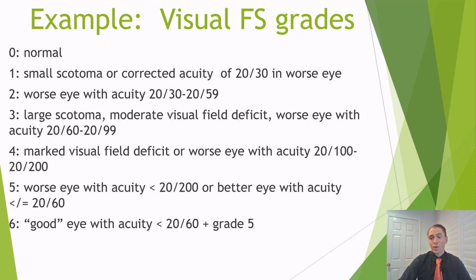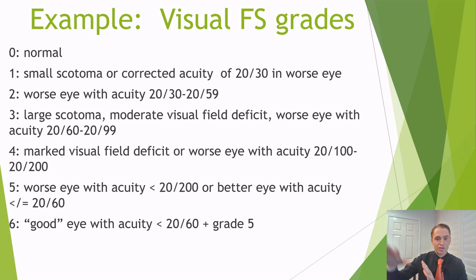To give a few examples, these are the grades 0 through 6 of the visual function. Grade 0 is normal. Grade 1 would be a small scotoma — a small visual defect, usually due to optic neuritis — or acuity in the worse eye of 20/30 or worse. Grade 2 would mean the worst eye has lower acuity of 20/30 to 20/59. Grade 3 would be a larger scotoma or a moderate visual field deficit — a deficit in the ability to see in a certain area of your visual field, such as the left lower quadrant.